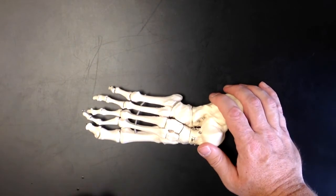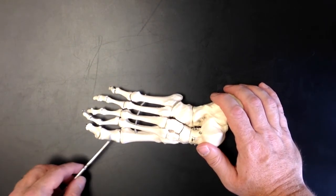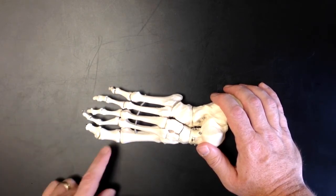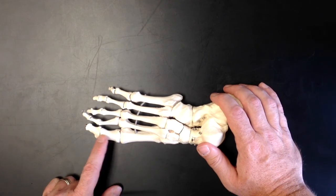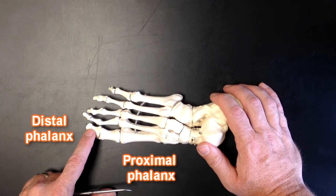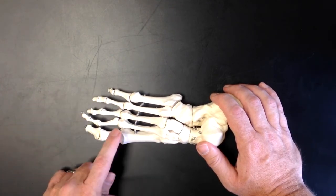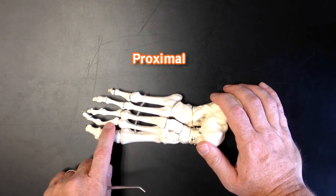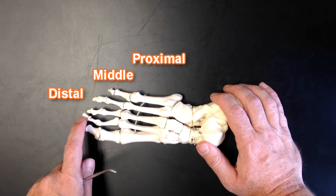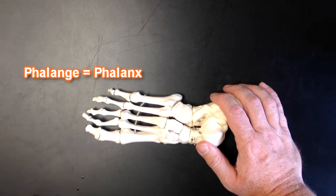And then we have the phalanges. We have two phalanges in the big toe and then three phalanges in all of the other toes. Just like in the thumb, two phalanges, we've got a proximal phalanx and a distal phalanx. And then with the other toe bones, the other phalanges, we've got a proximal middle and distal phalange or proximal middle and distal phalanx. Phalange and phalanx are terms that can be used interchangeably.